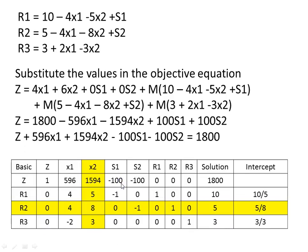The initial result is given in the tableau with columns z, x1, x2, s1, s2, r1, r2, r3, and solution. The rows are z, r1, r2, and r3. In the minimization problem, we check the non-basic variables x1, x2, s1, s2, and x2 takes the most positive value — so x2 is the entering variable.